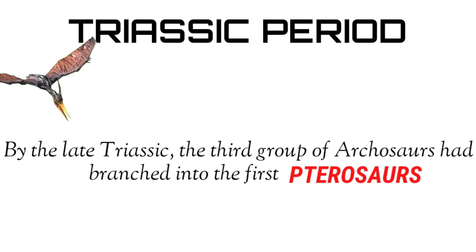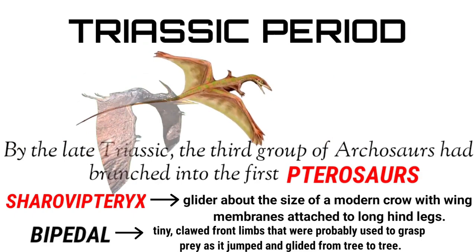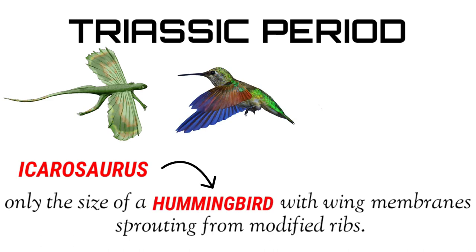By the late Triassic, a third group of Archosaurs had branched into the first pterosaurs. Sharoviopteryx was a glider about the size of a modern crow, with winged membranes attached to long hind legs. It was obviously bipedal, with tiny clawed front limbs that were probably used to grasp prey as it jumped and glided from tree to tree. Another flying reptile, Icarosaurus, was much smaller — only the size of a hummingbird — with winged membranes sprouting from modified ribs.